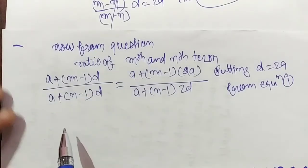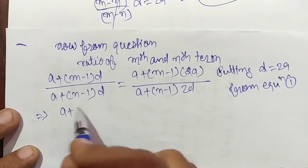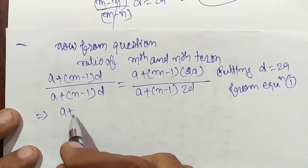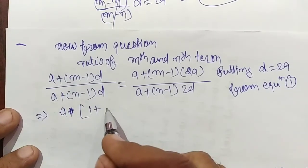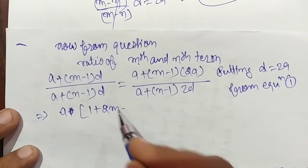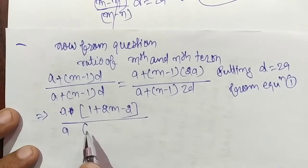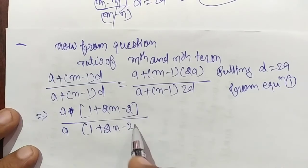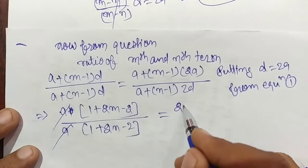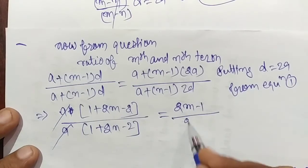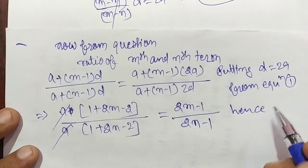Now substituting d = 2a, 'a' becomes common and cancels out. We get (1 + 2m - 2) / (1 + 2n - 2), which simplifies to (2m - 1) / (2n - 1). Hence proved.